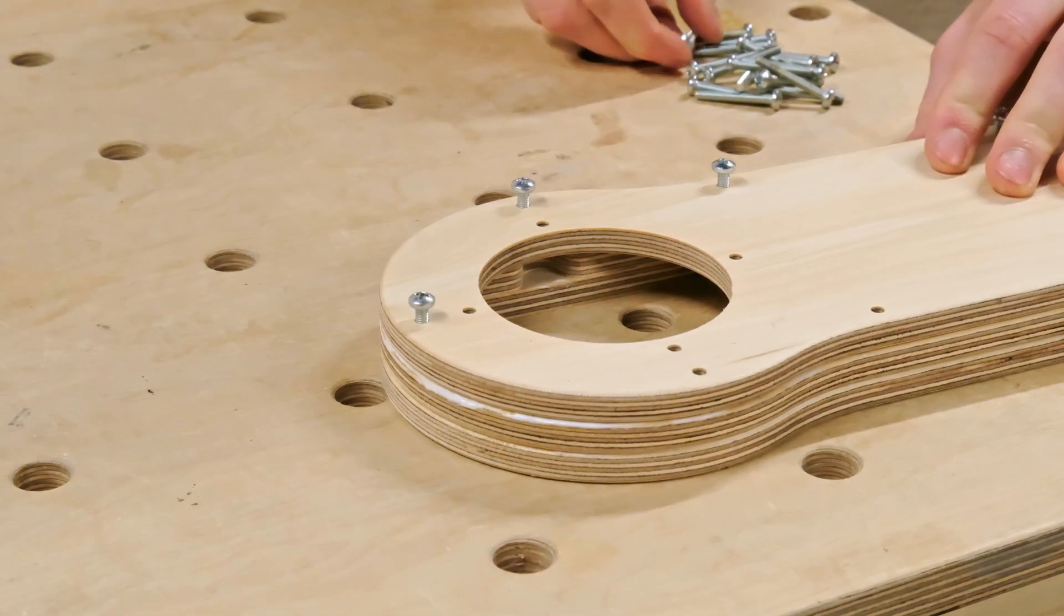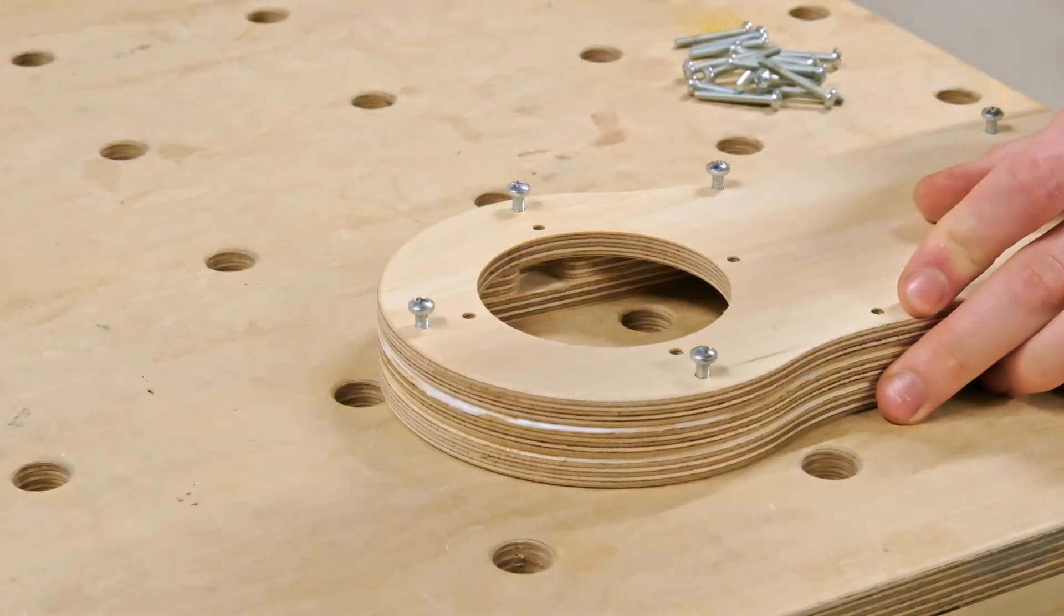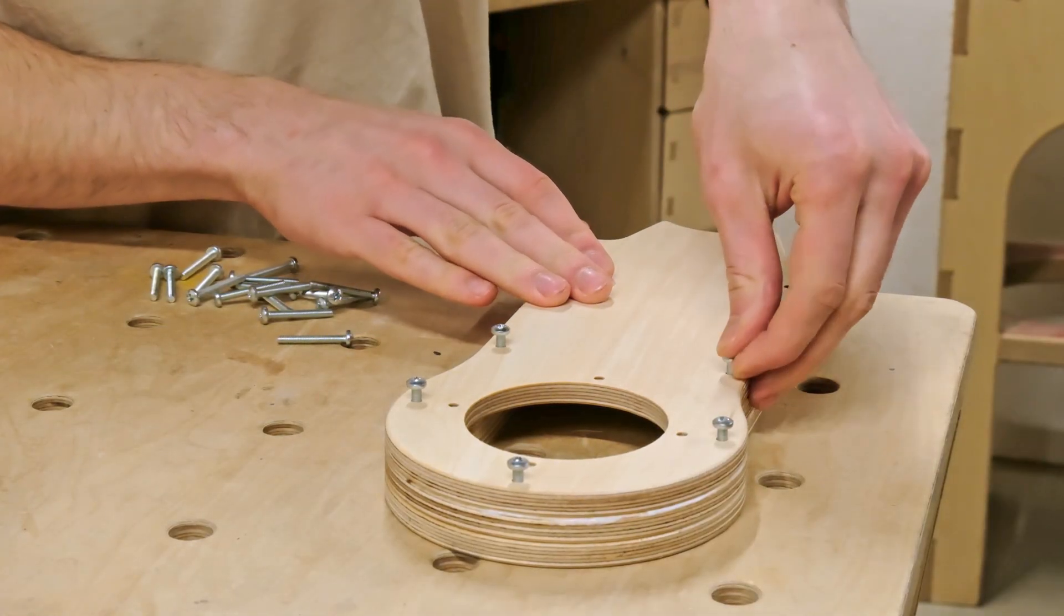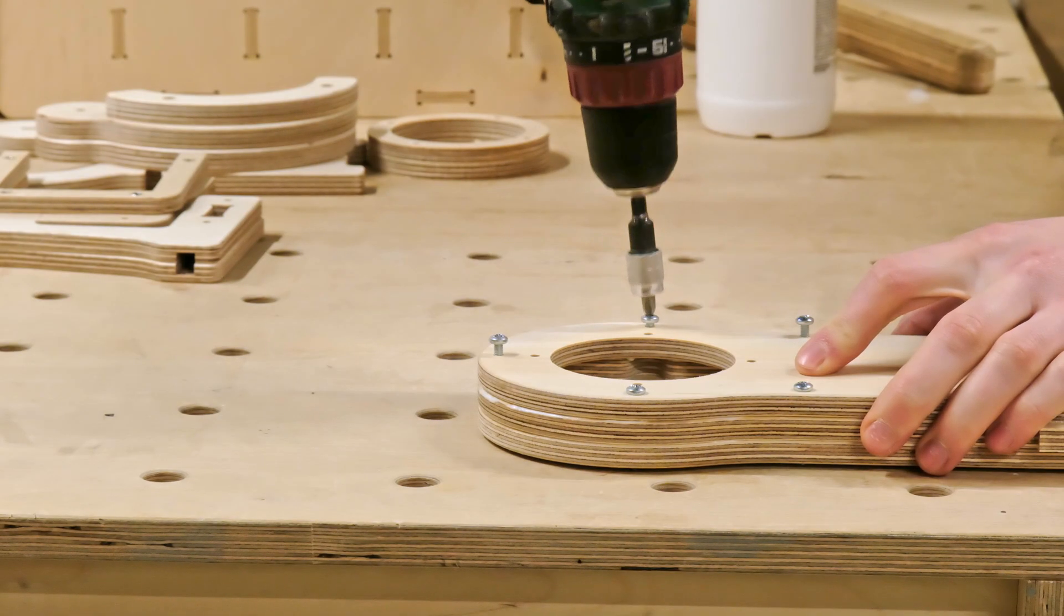Now we can stack the parts on top of each other and add M4 screws through the holes. The screws are great not only for properly aligning the components, but also serve well when squeezing the parts together and pushing out the excess glue from the seam, eliminating the need for clamps.